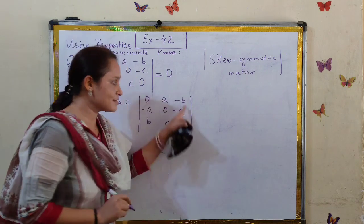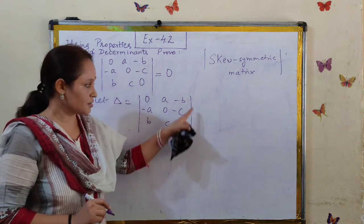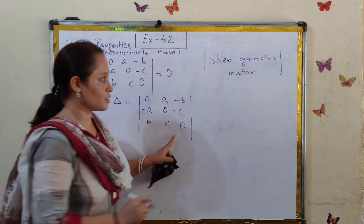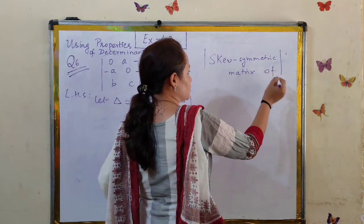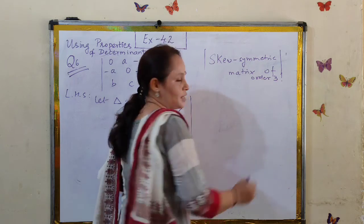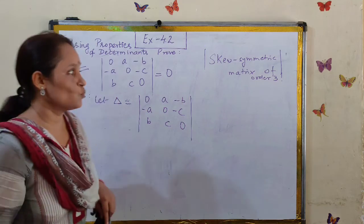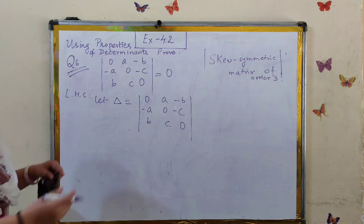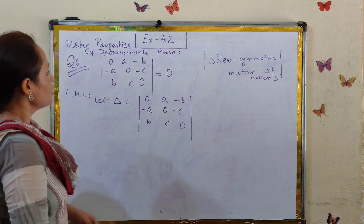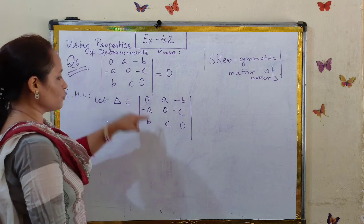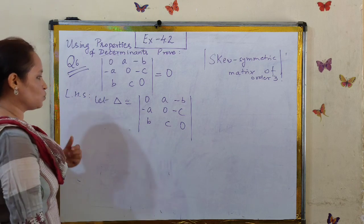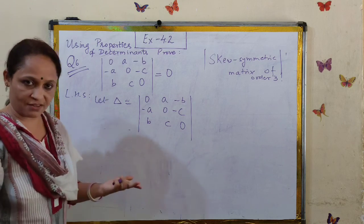The order of this determinant is 3 by 3 — order 3. We will note down that result at the end after we complete this question. So to prove this determinant is equal to 0, let's begin with the properties we want to use.